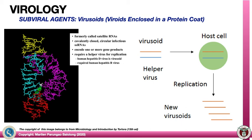There are also virozoids — they are like viroids but instead of being naked, they are enclosed in a protein coat. Formerly called satellite RNAs, they are covalently closed circular infectious single-stranded RNAs. They encode one or more gene products and require a helper virus for replication — this is very unique for virozoids. For example, the human hepatitis D virus is an example of a virozoid that requires hepatitis B virus to replicate.